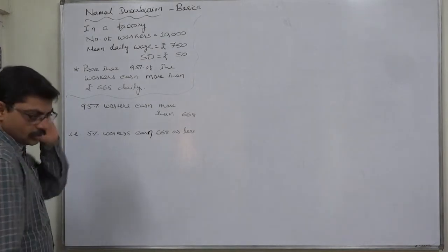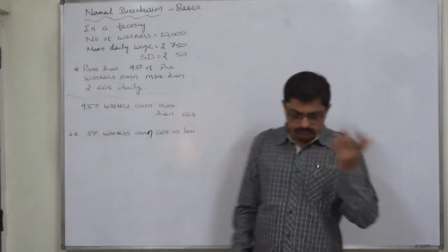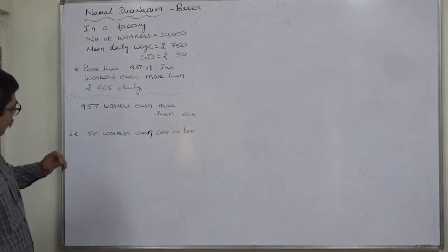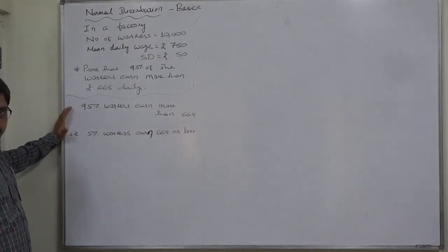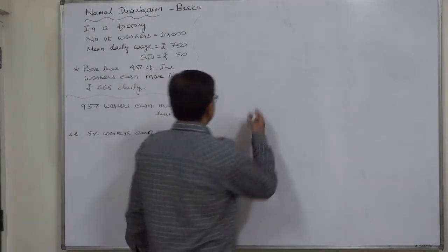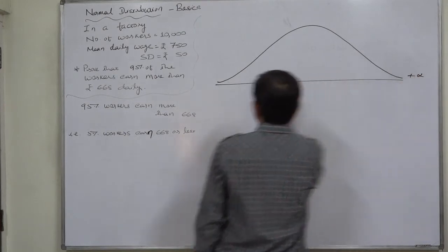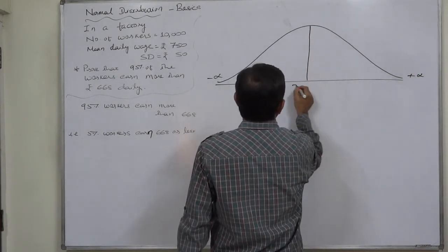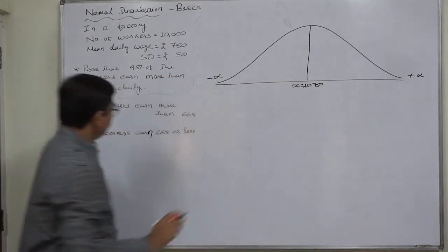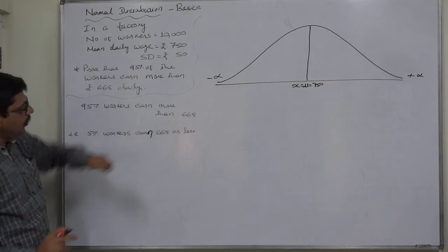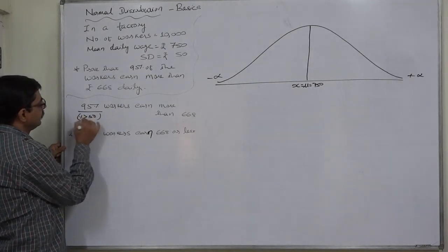If 668 is taken as the cutoff — exactly 668, less than 668, and greater than 668 — that will cover the total 100%. So 668 should be taken as the landmark. Now let us draw the sketch and present the whole data under the normal curve. X is exactly equal to the mean, that is 750. 95% of workers earn more than 668.